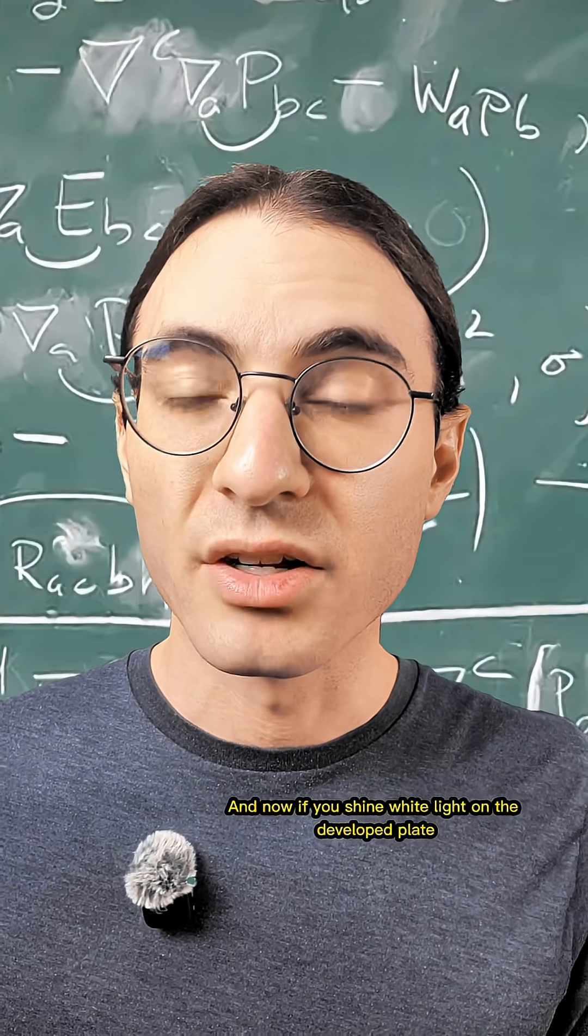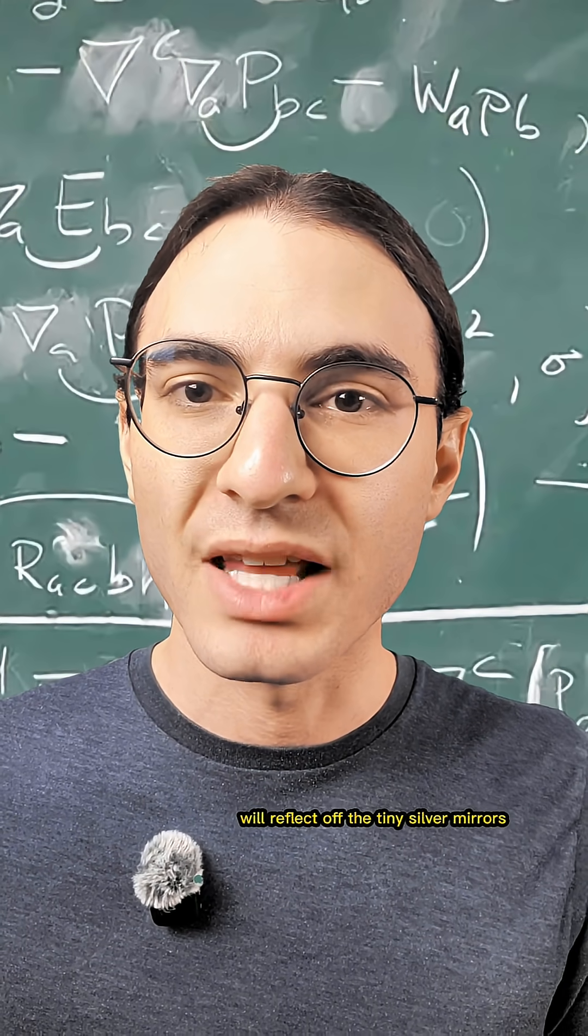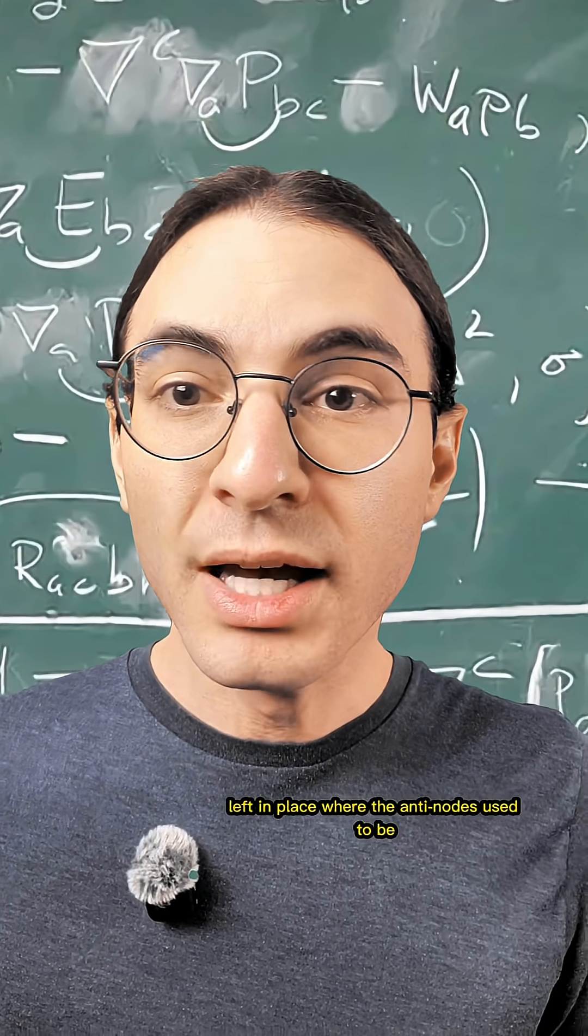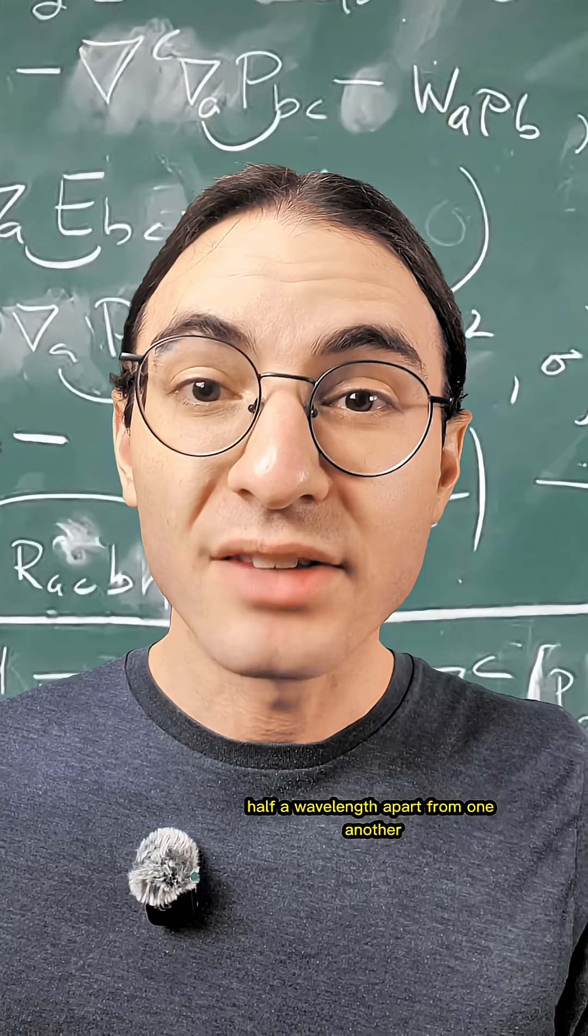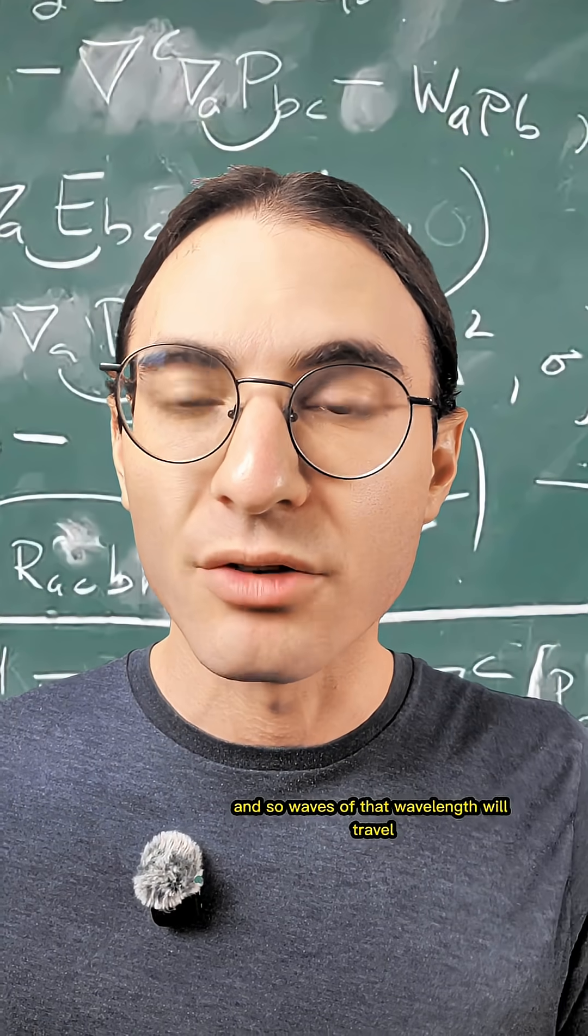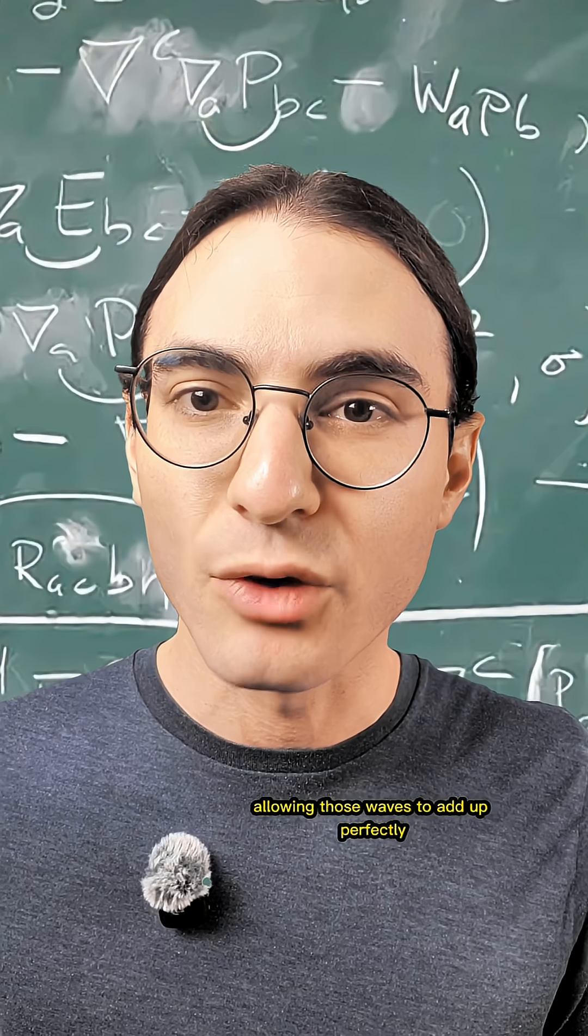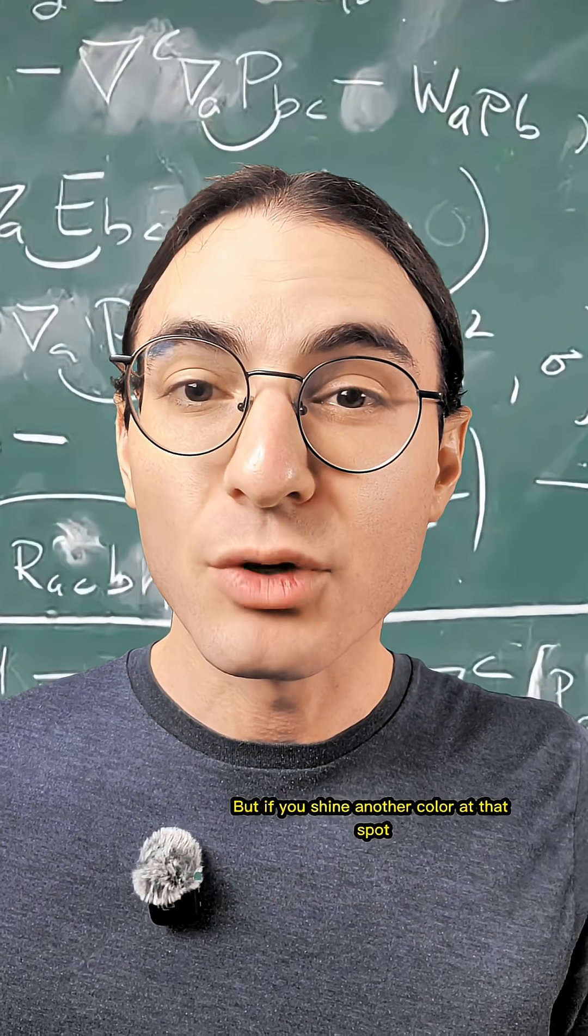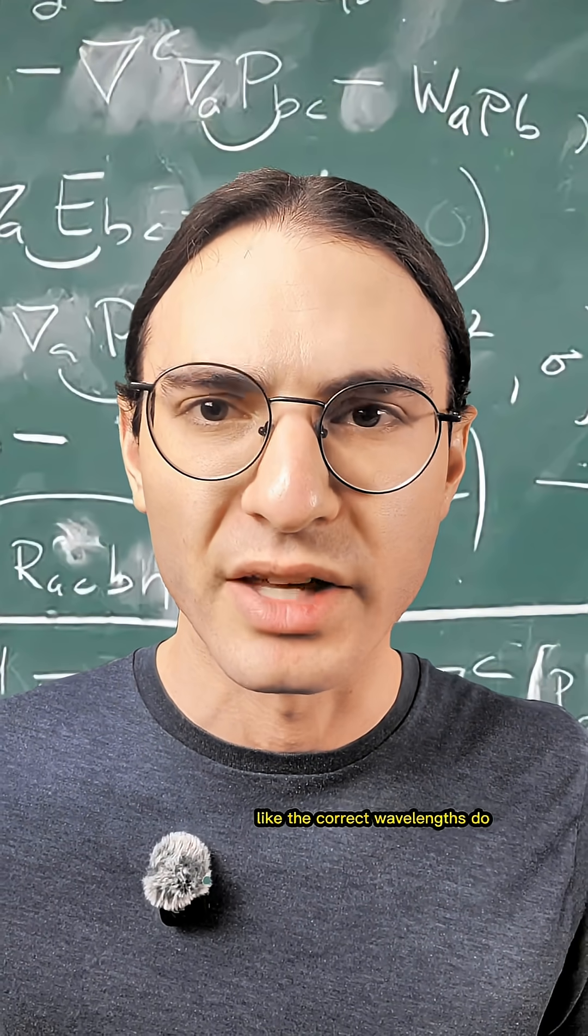And now, if you shine white light on the developed plate at the correct angle, some of that light will reflect off the tiny silver mirrors left in place where the antinodes used to be. But those antinodes were spaced exactly half a wavelength apart from one another. And so waves of that wavelength will travel one full additional cycle upon reflection for each mirror it passes through, allowing those waves to add perfectly. But if you shine another color at that spot, the reflections won't line up and amplify like the correct wavelengths do.